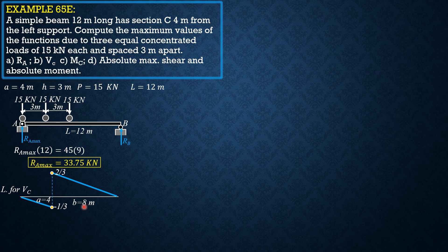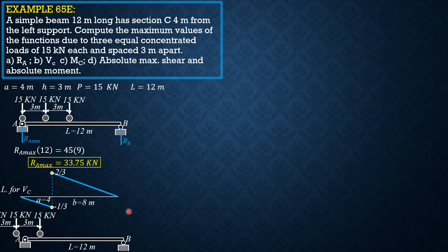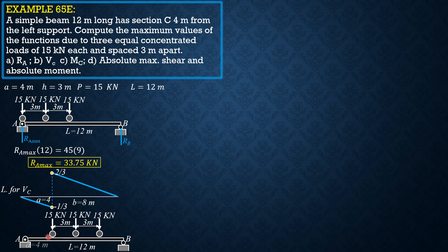Therefore, for maximum shear at C, the leftmost load is placed over the 2/3 ordinate, with the other two loads on the longer positive segment. Since A is 4, then 4 + 3 + 3 = 10, and the span is 12, so the remaining distance from the leftmost load to support A is 2 meters.